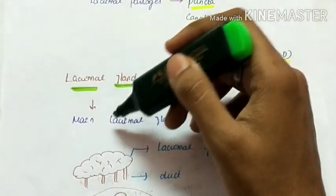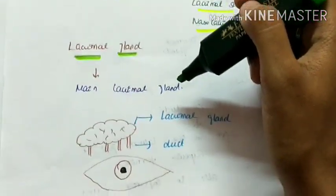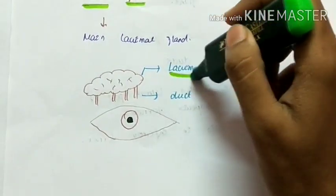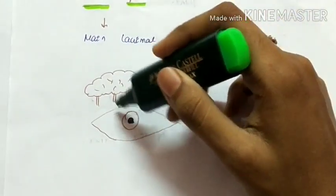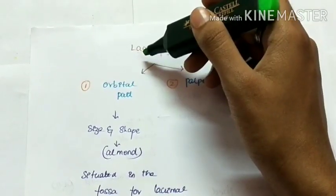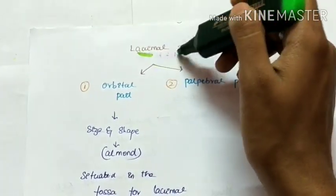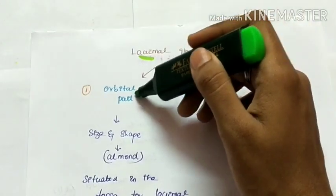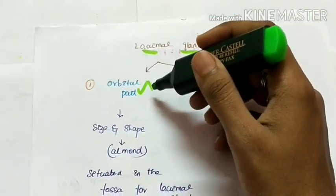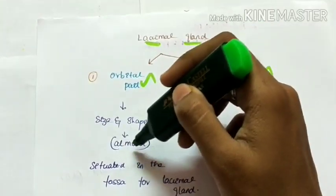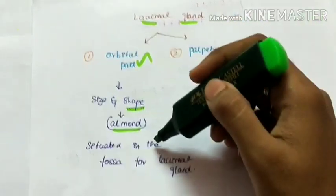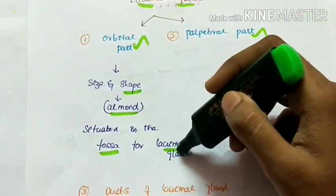There are main lacrimal glands and accessory lacrimal glands. The lacrimal gland consists of two parts: the orbital part and the palpebral part. The orbital part is almond-shaped and is situated in the fossa for the lacrimal gland.